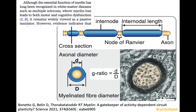Myelin is not just a passive insulator, but it's a much more dynamic process than many people realize. The oligodendrocytes wrap myelin around the axons of the nerves. And in very long axons, there are different oligodendrocytes that provide the myelin on each side of the node of Ranvier.